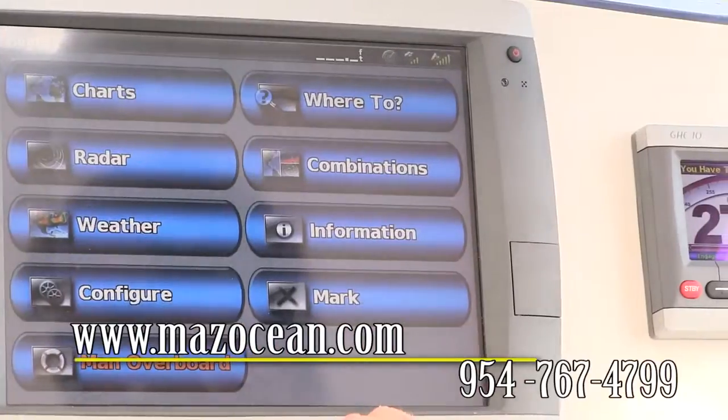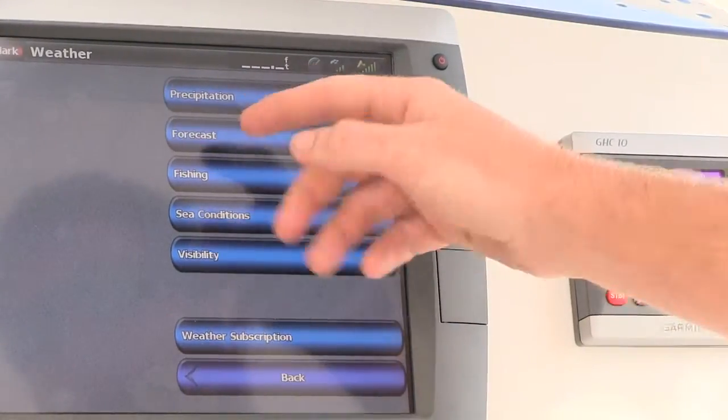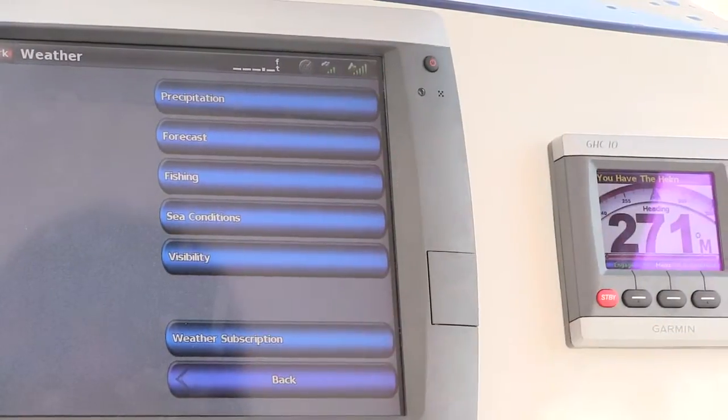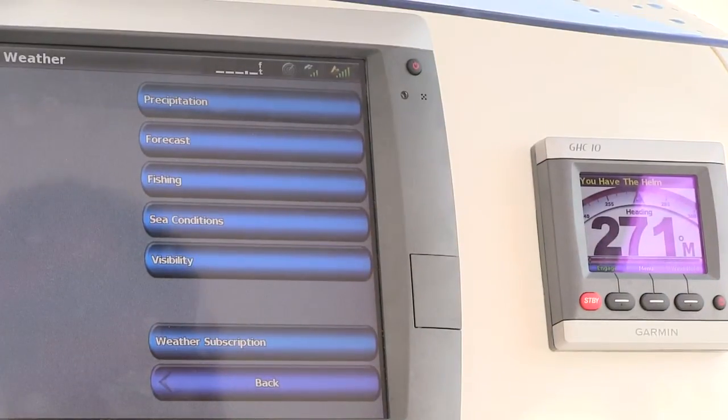And then one of the other things we installed on this boat is the XM Weather which gives you various options in terms of weather precipitation through to sea conditions. There's even a fishing setting here as well.